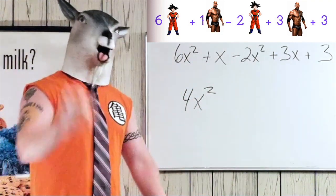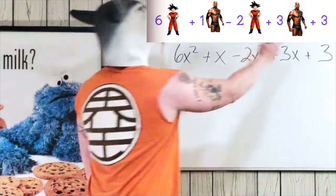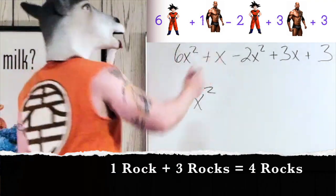Now let's look at the rock. How many rocks we got? Looks like we got one rock over here, and we're adding three more rocks over there. So boom, one plus three. That's four rocks.